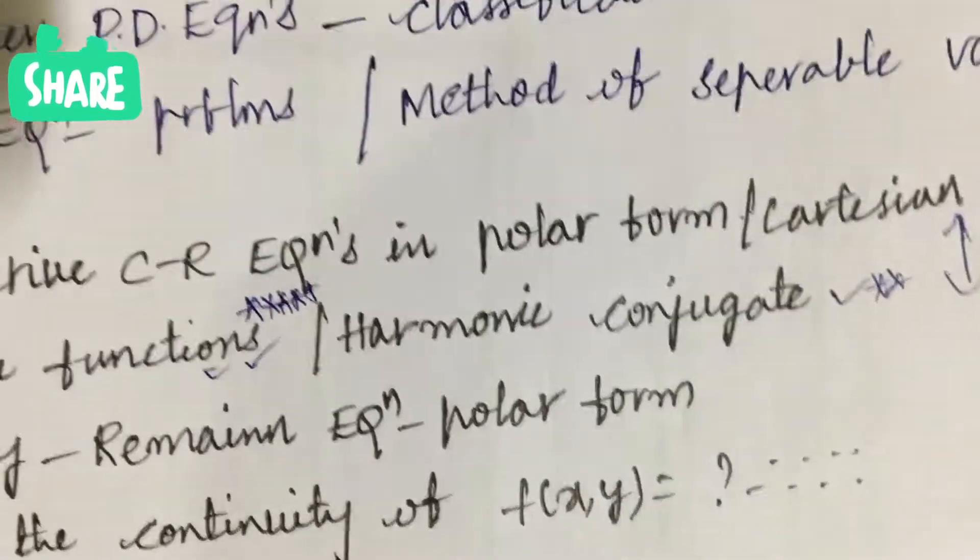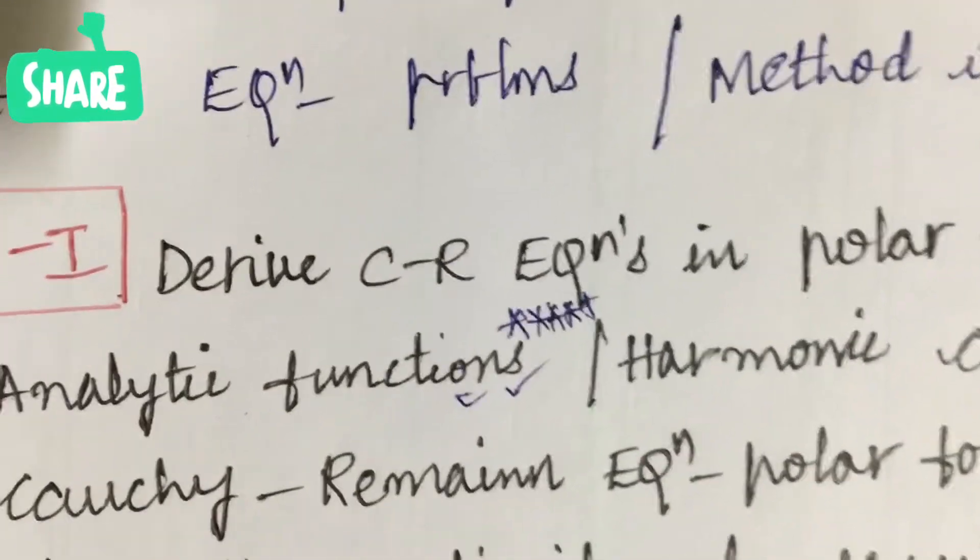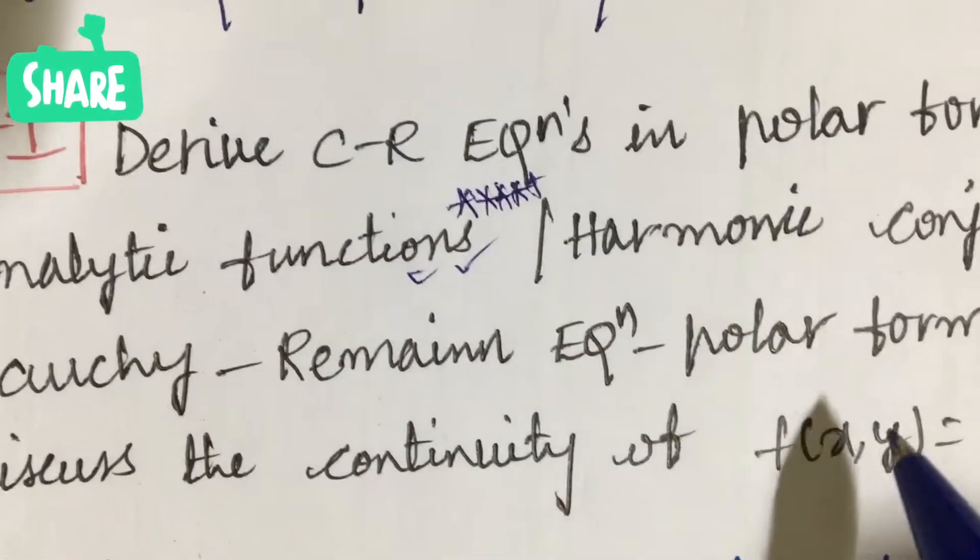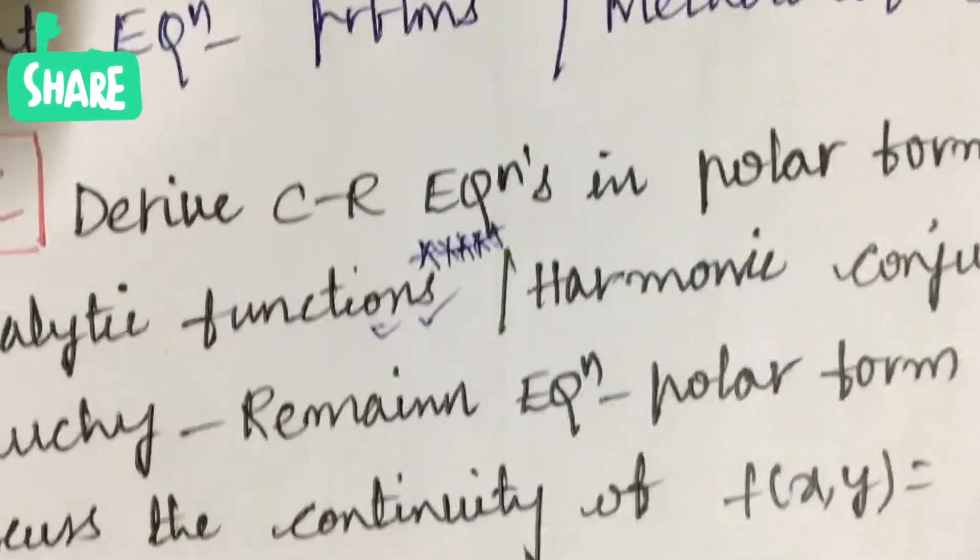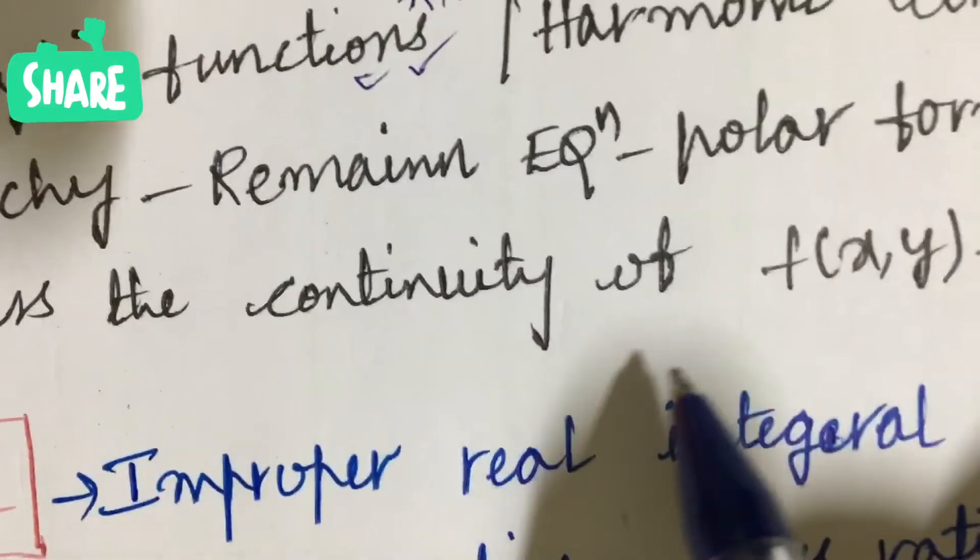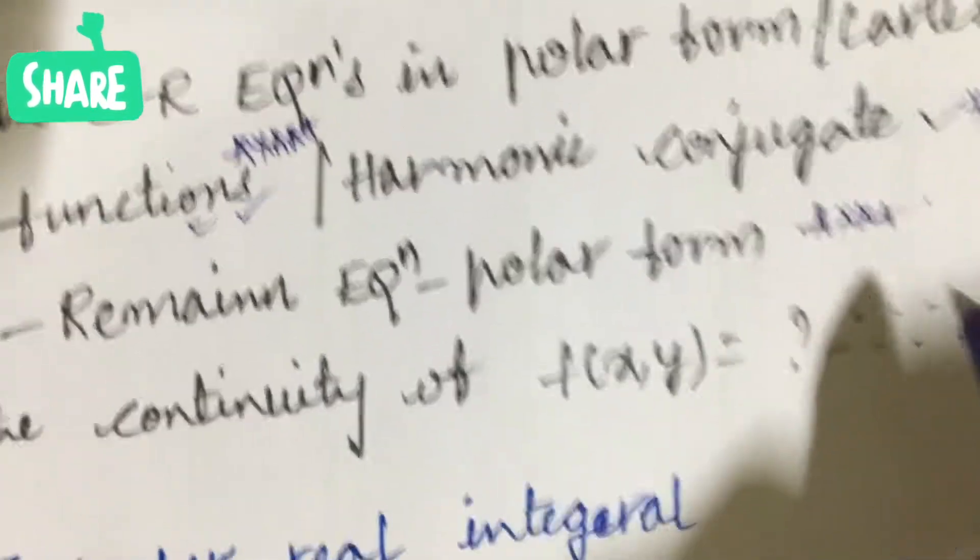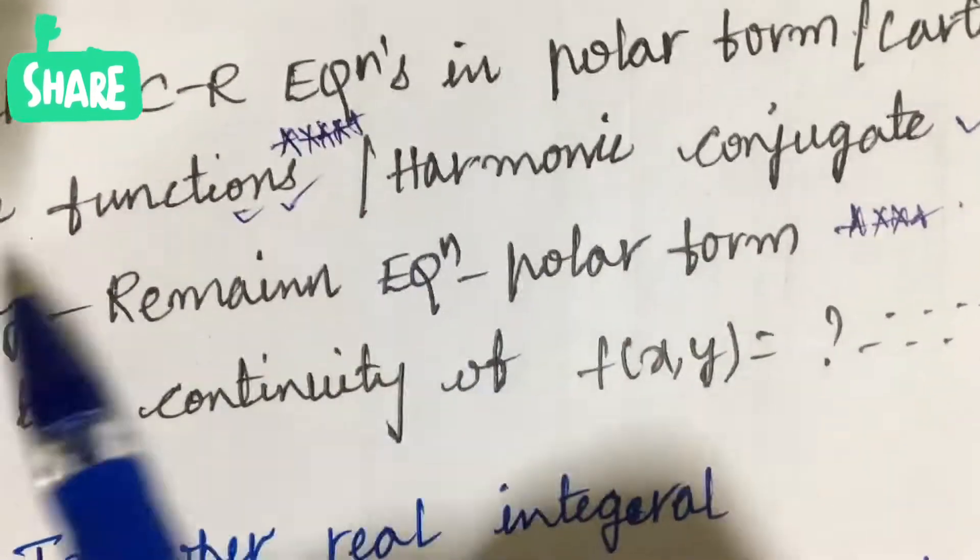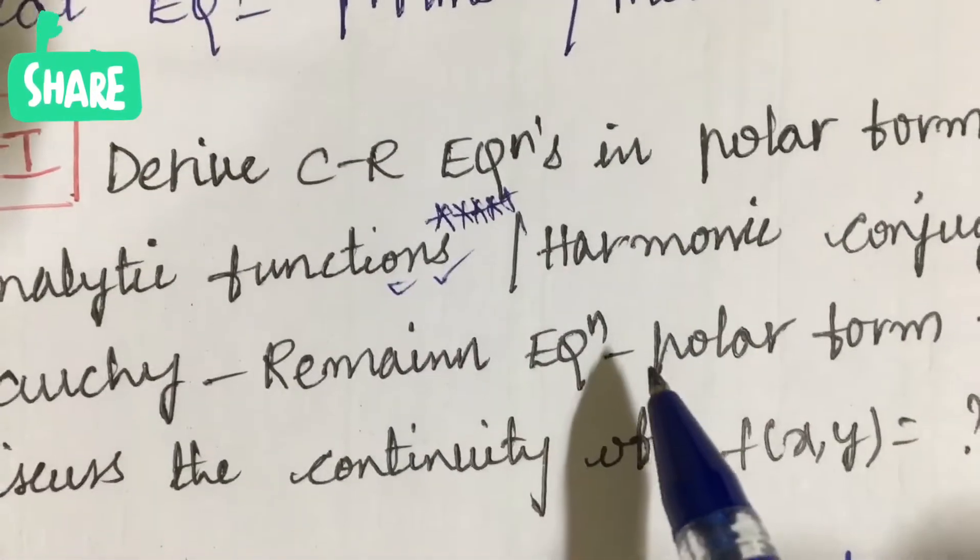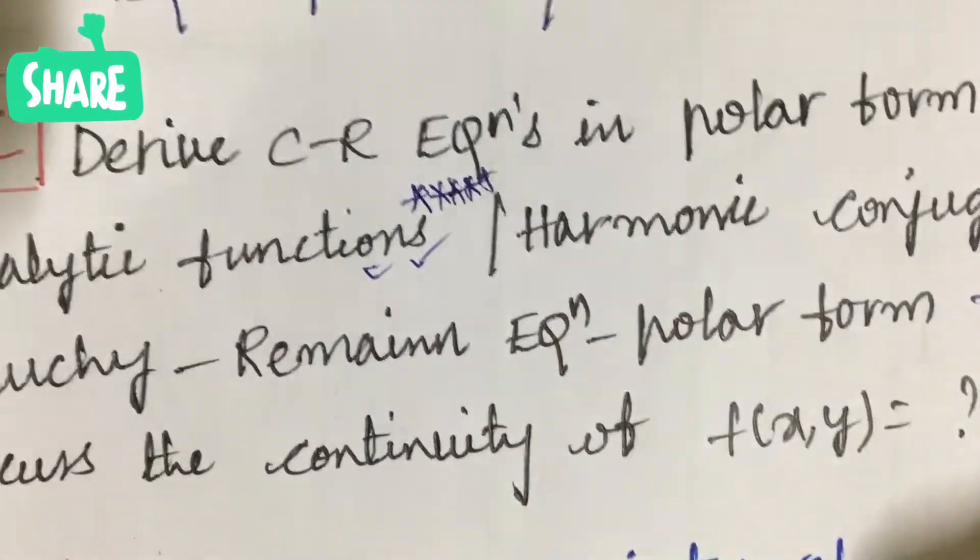Do not expect direct 15 mark. Cauchy-Riemann equation in polar form or Cartesian form may also be one of the very important questions. Discuss the continuity of f(x,y) for a given relation. You need to work out the concept base, dear students, in order to clear this subject.